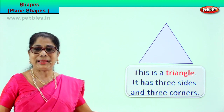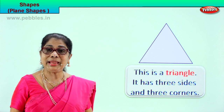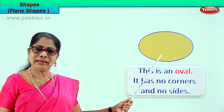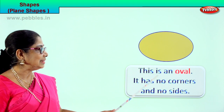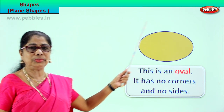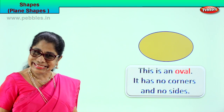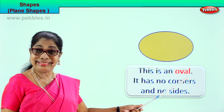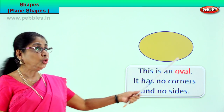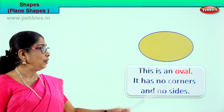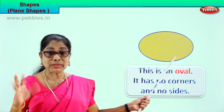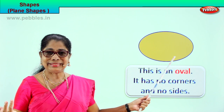Now let's look at another plane shape — what is this? Almost like the circle but it is not. This is an oval. An egg in your house looks almost like an oval shape. This is an oval. How do you describe it? It has no corners and no sides. This shape is called an oval — it has no sides and no corners.